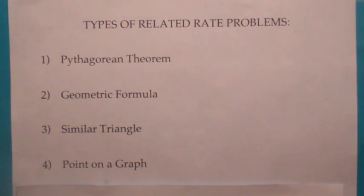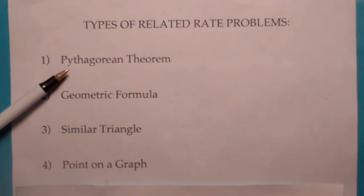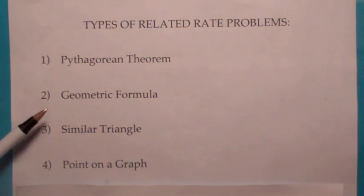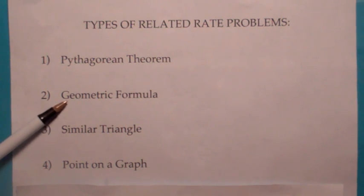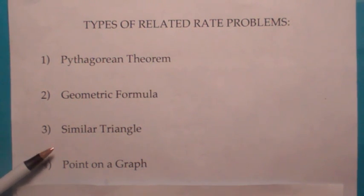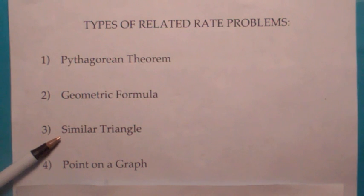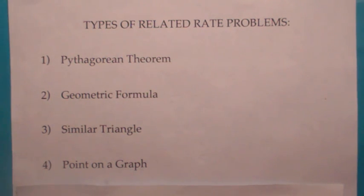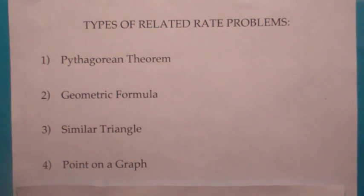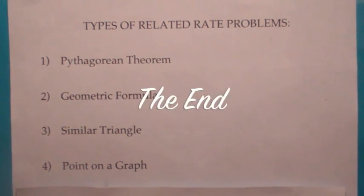So what we've done is we've looked at four basic types of related rate problems. The ladder problem was an example of the Pythagorean theorem type. The spherical balloon being inflated was an example of the geometric formula type. The cone problem was an example of a similar triangle type. And the last one was an example of a point on the curve. In part two, we're going to look at the fifth type of related rate problem and several other examples. See you then.